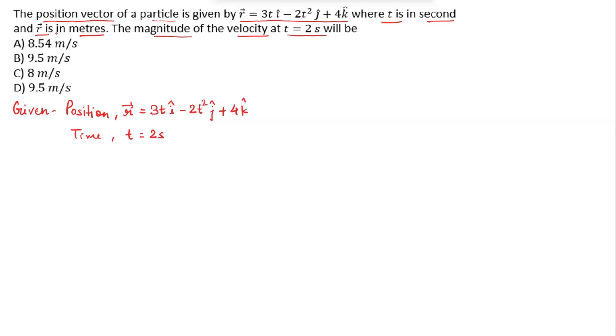Now, we find the velocity. Velocity is given as v vector equals differentiation of position with respect to time.